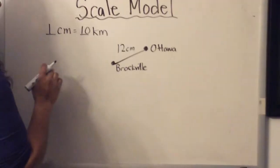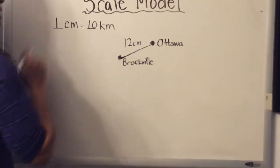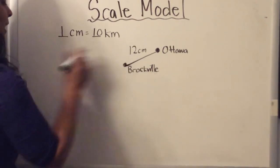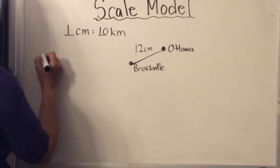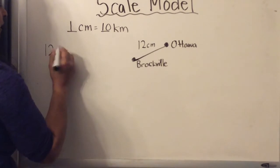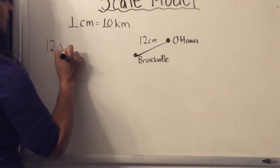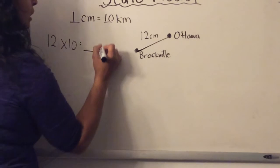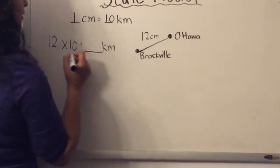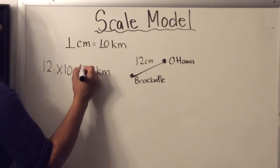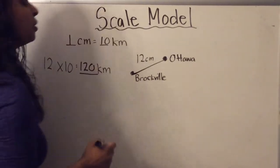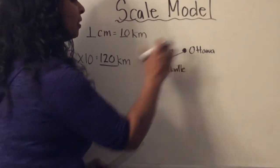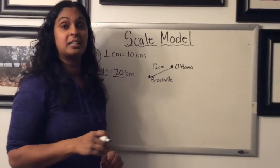If I know that one centimeter equals 10 kilometers, I would take those 12 centimeters and multiply by 10 to figure out how many kilometers that is in real life. So 12 times 10 equals 120. The real-life distance between Brockville and Ottawa is 120 kilometers.